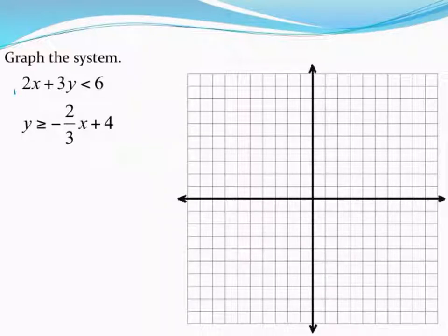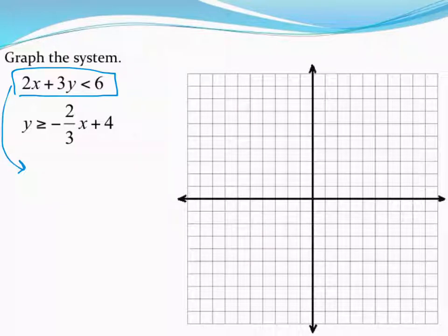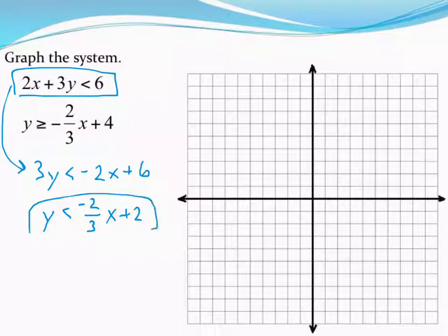In this case, notice my first inequality is not in slope intercept form. So I'd probably want to go ahead and rearrange that first. I'm going to subtract 2x from both sides. So 3y would be less than negative 2x plus 6. Then I'll divide everything by 3. Keep in mind if you ever divide by negative, that inequality symbol flips around. My new inequality in slope intercept form would be y is less than negative 2/3 x plus 2.